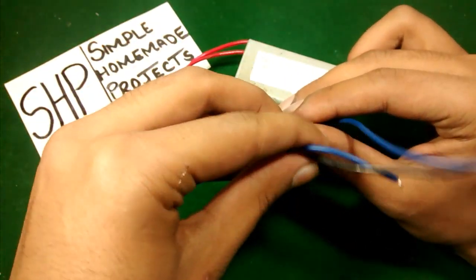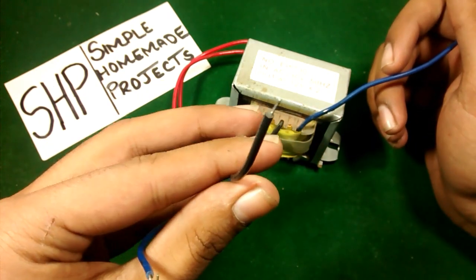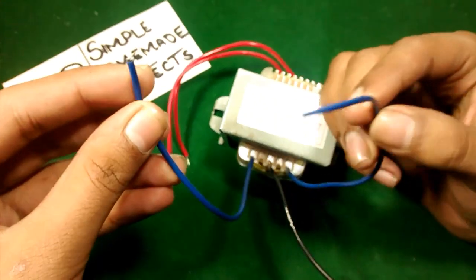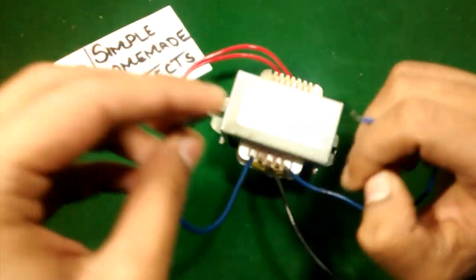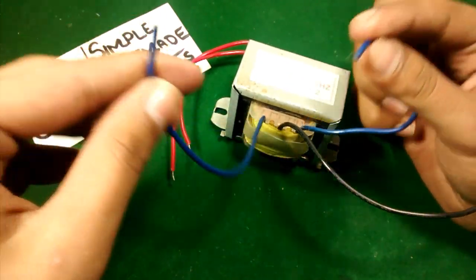But if you want to obtain 24 volts at its output, you have to use only these two end wires or the side wires, not the central wire. You have to leave the central wire.